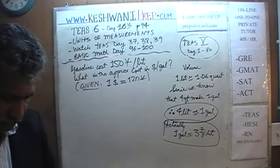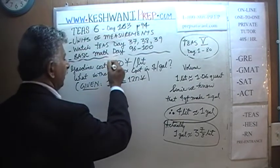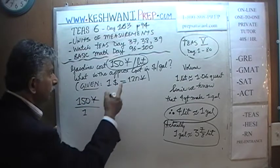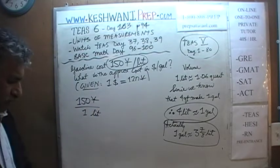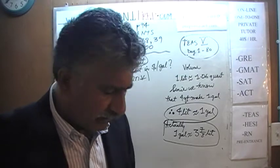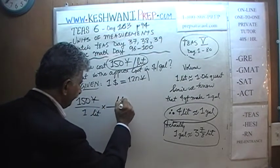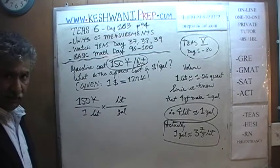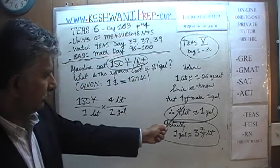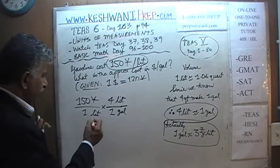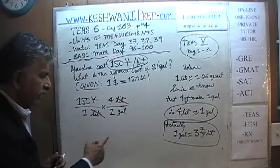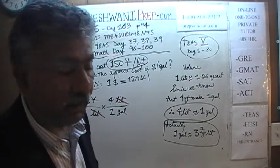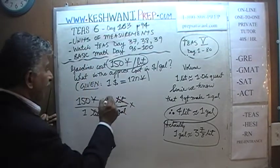Let's do it in one step. Our starting point is: gasoline costs 150 yen per one liter. It's up to you whether you want to get rid of the liter first or the yen first — it makes no difference. Let's get rid of liters first. We put liter on the top to cancel it. We want price per gallon, and one gallon is made up of four liters. A liter appears on the bottom and a liter appears on the top — we can cancel it. We already have the gallon at the bottom. Now we need dollars on the top, by realizing that one dollar is 120 yen.